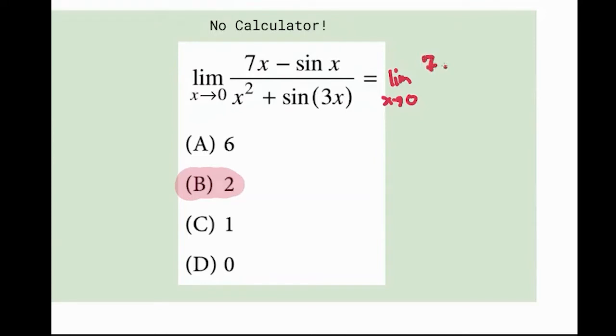We're going to do the derivative of the top, so it's going to be 7 minus cosine X. And this is going to be divided by 2X plus 3 cosine 3X.